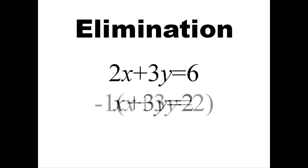From here, we want to eliminate, or cancel out, one of the variables. In this case, it will be easiest if we multiply the second equation by negative 1, since that will give us 3y in one equation and negative 3y in the other.